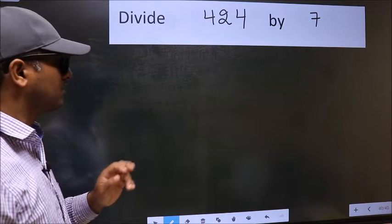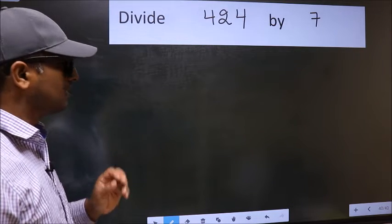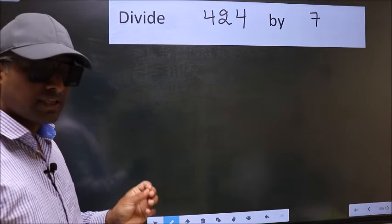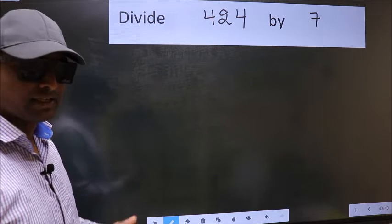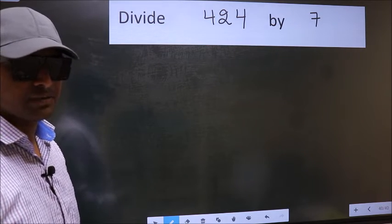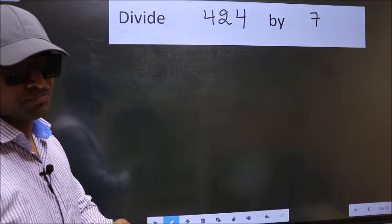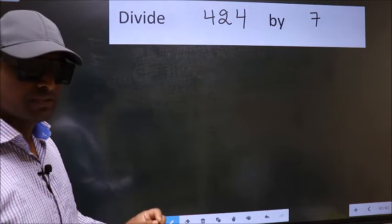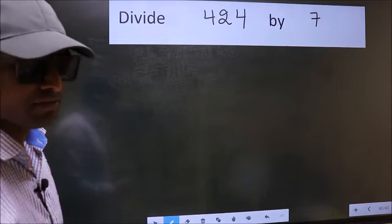Divide 424 by 7. While doing this division, many make a mistake. What is the mistake that they make? I will let you know, but before that, we should frame it in this way.